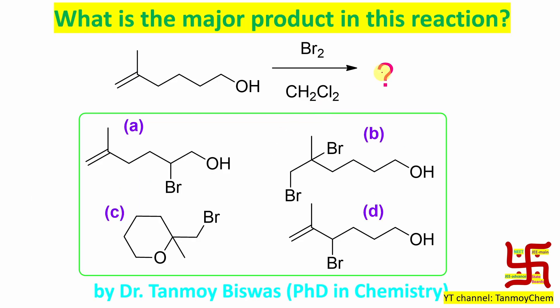What is the major product in this reaction? Obviously, this one — CH2Br on one side, CH3O in a cyclic six-member ring.